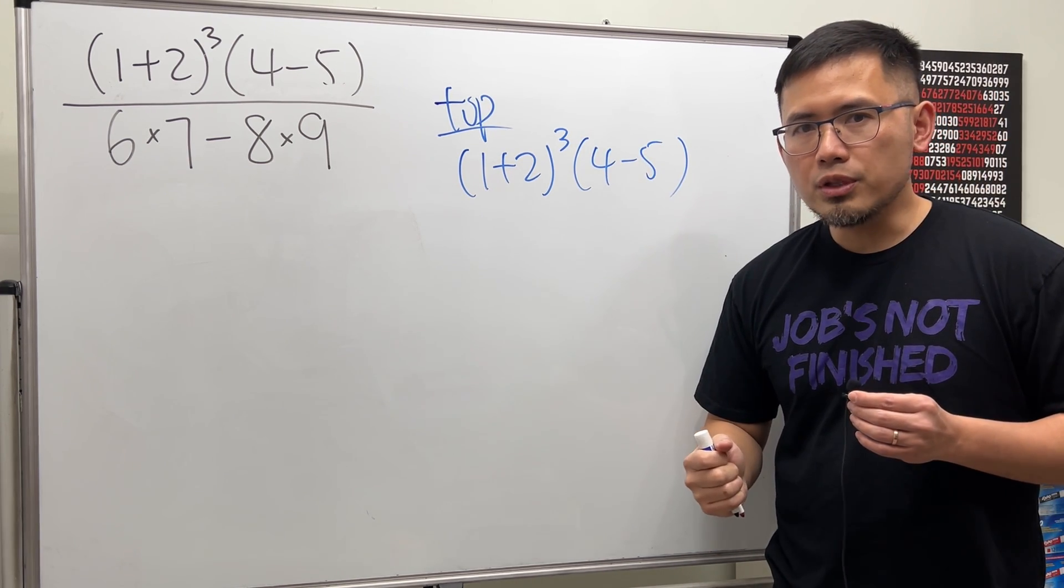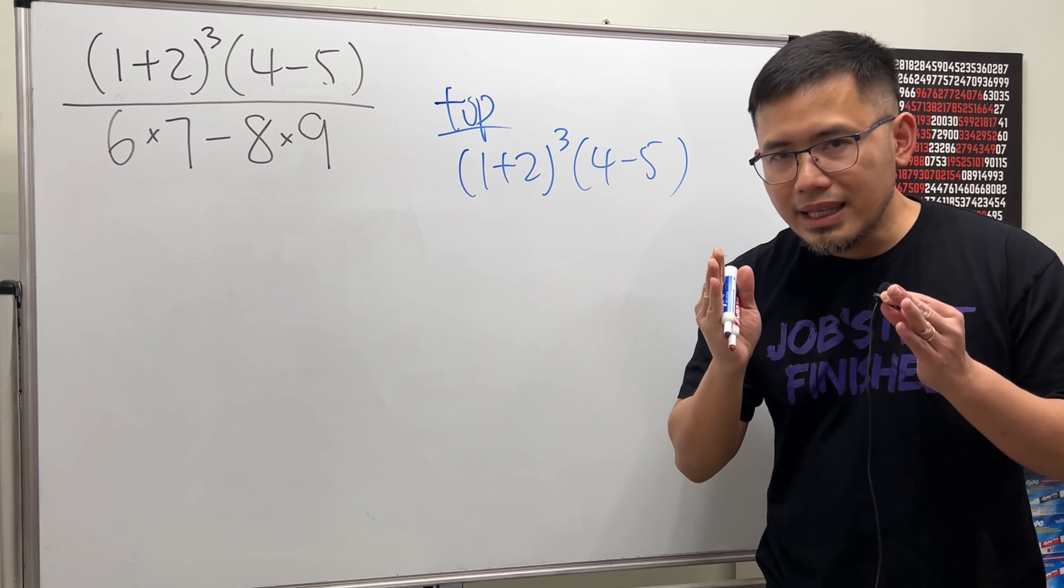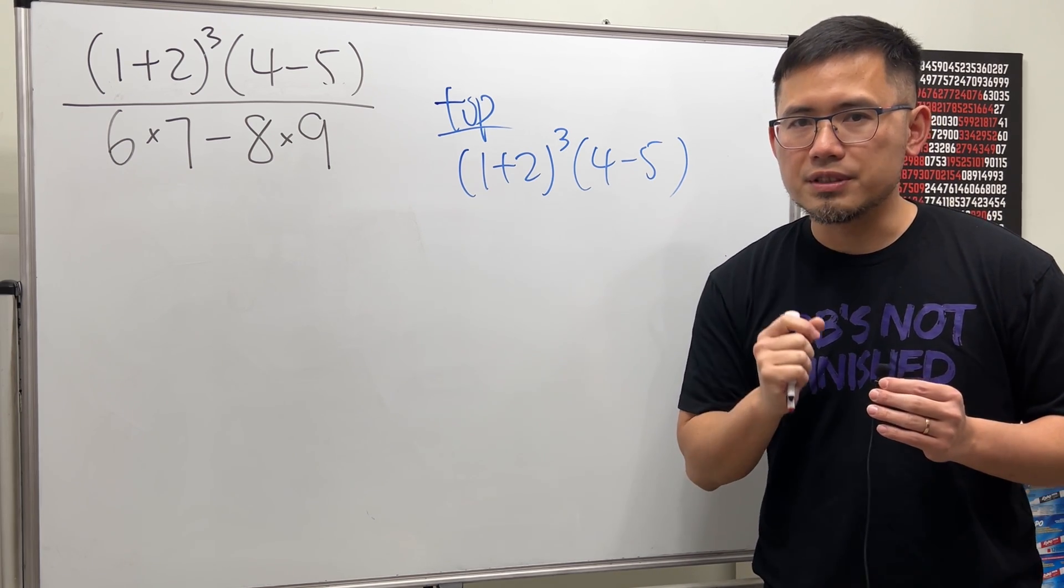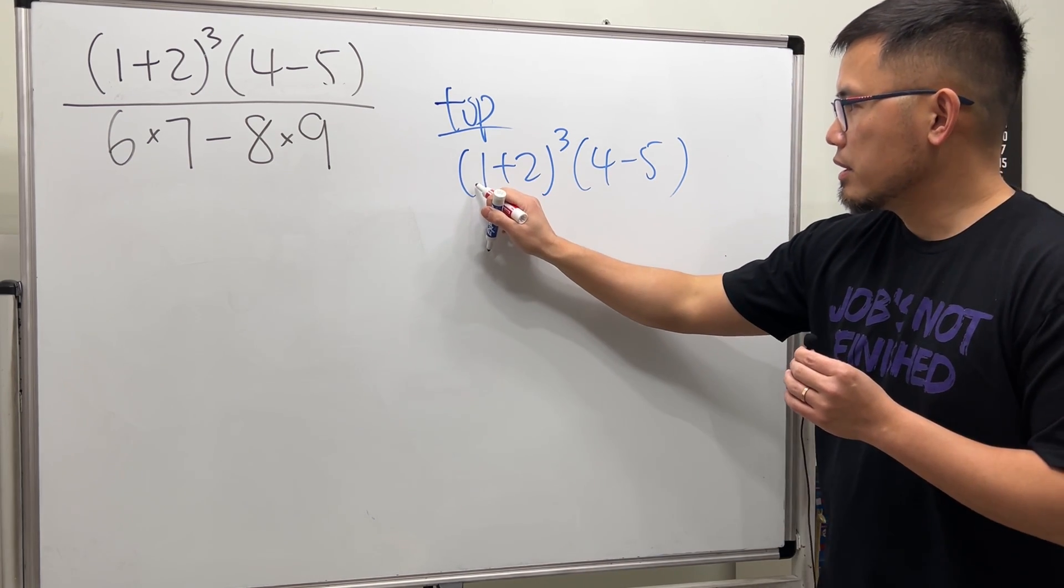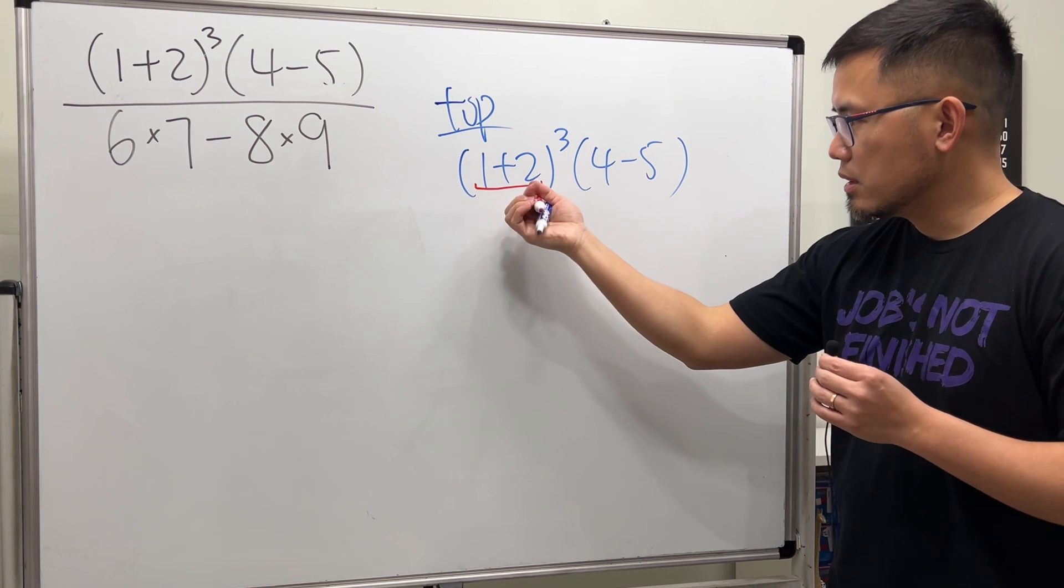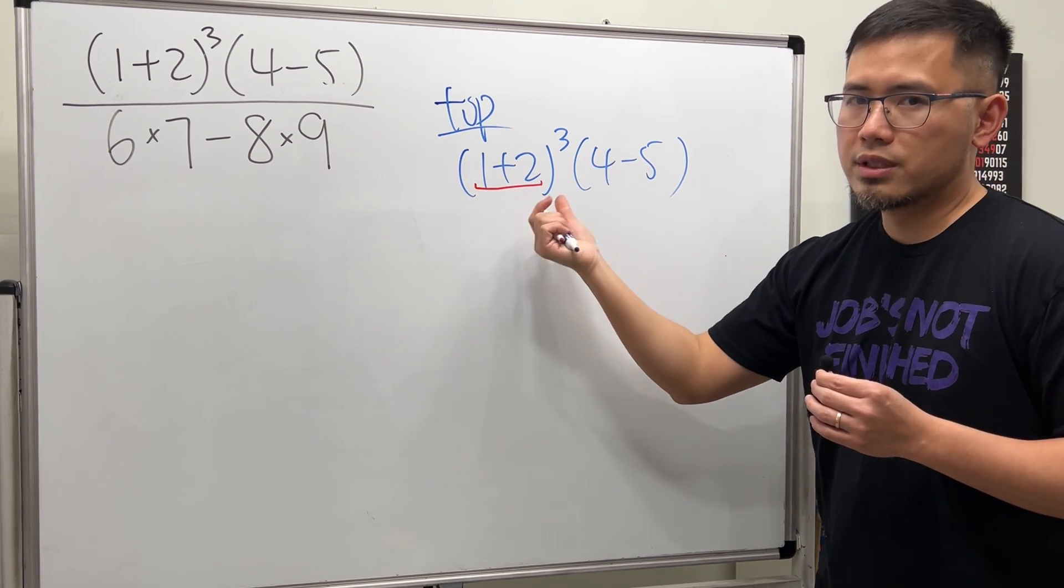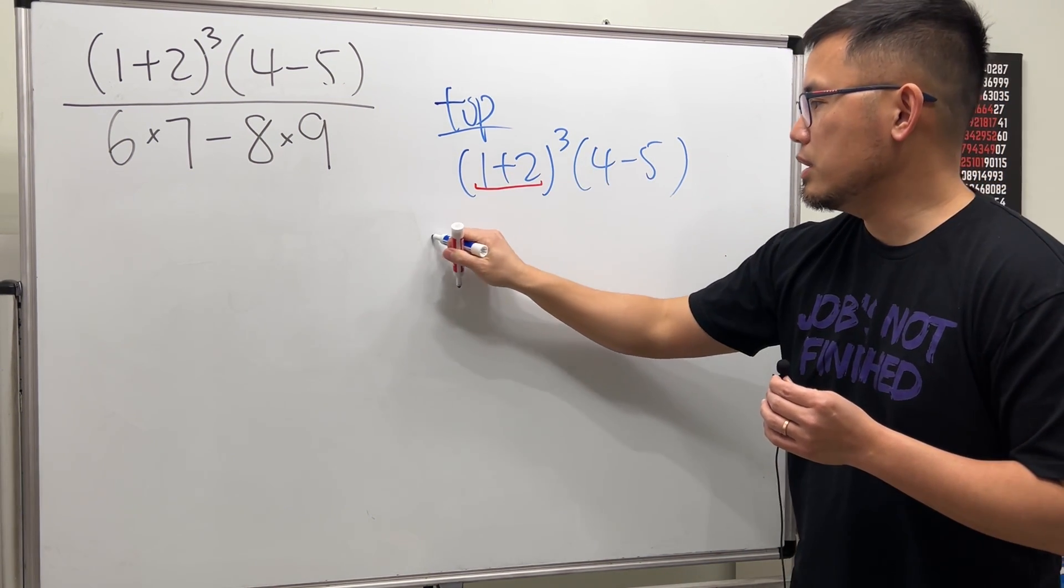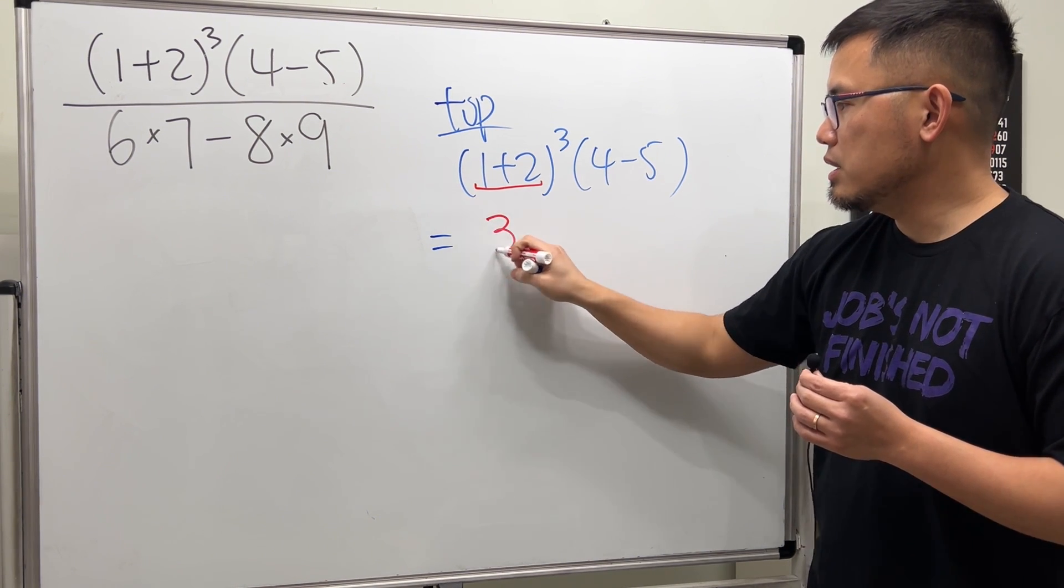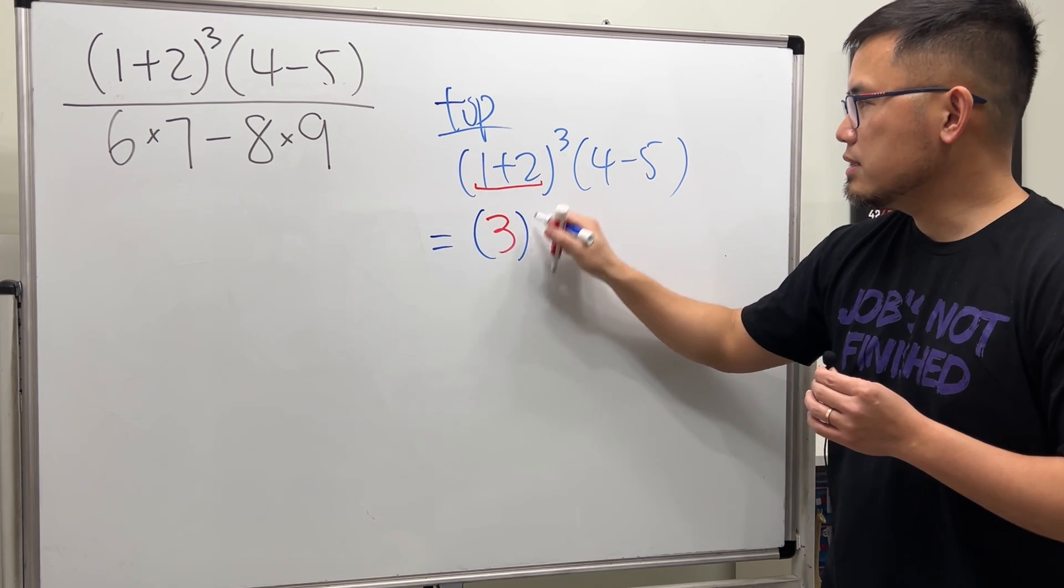Remember, the order of operations - we always have to do inside of the parentheses first. So have a look here, we have 1+2 that's inside of this parentheses, we work that out first. 1+2, we get 3.